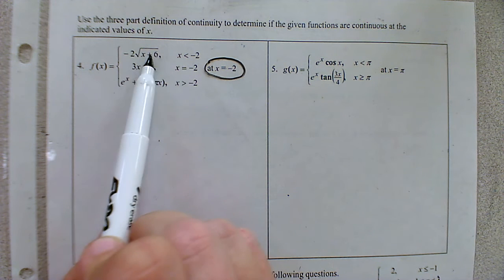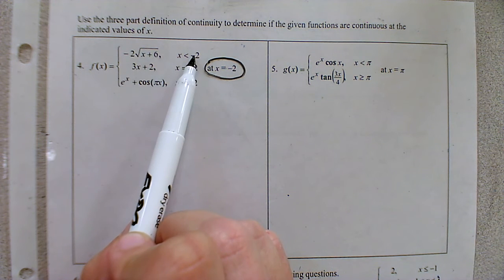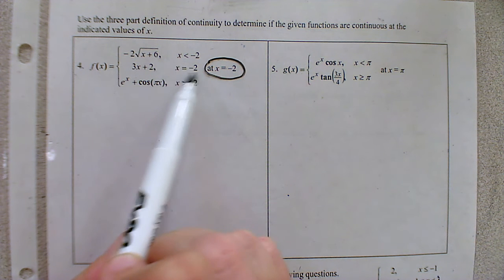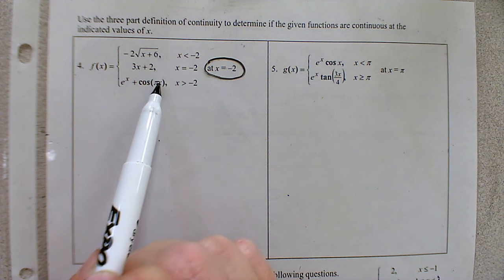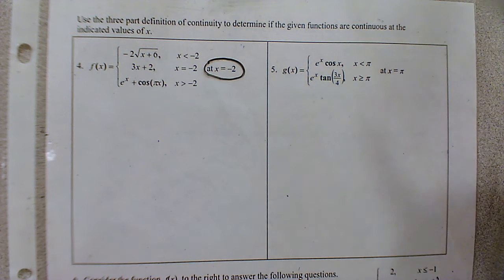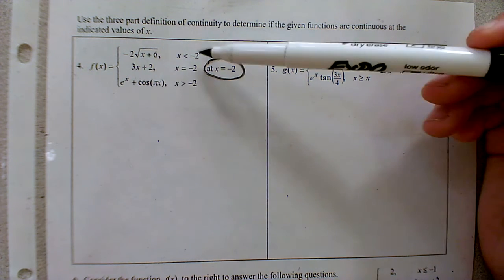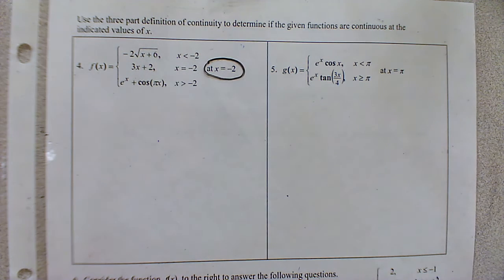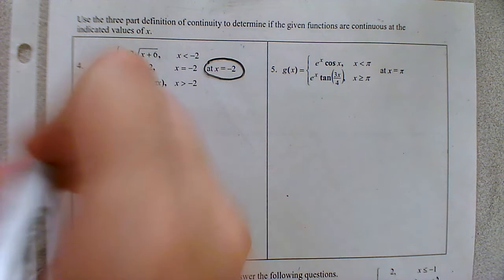The first section stops at x equals negative two, the second piece is only defined at x equals negative two, and the third piece begins at x equals negative two. So we have three equations involving x equals negative two, and we just want to make sure they all match up.